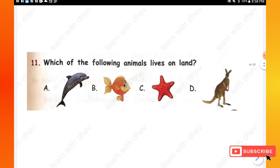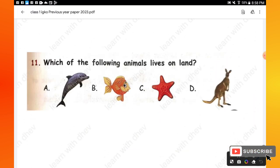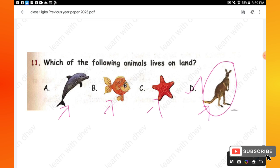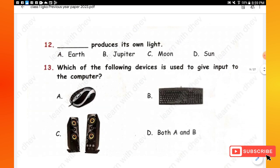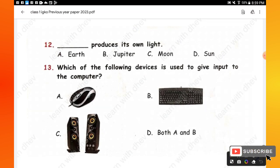Question 11: Which of the following animals lives on land? Options are: whale, fish, starfish, and kangaroo. Kangaroo is a land animal and all the rest are water animals, so option D is the right one. Question 12: Which produces its own light? Options are: Earth, Jupiter, Moon, Sun. The Sun has its own light, hence the answer is option D.